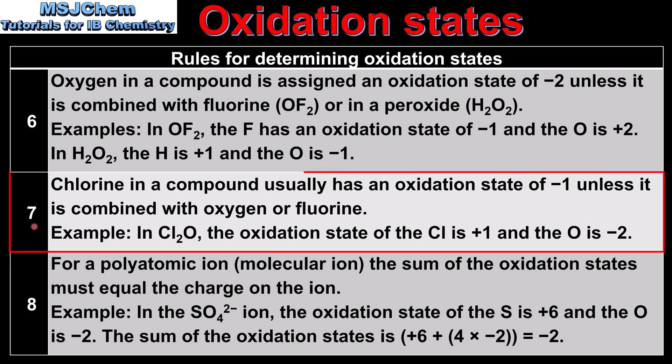Rule 7 concerns chlorine. Chlorine in a compound usually has an oxidation state of minus 1, unless it is combined with oxygen or fluorine. For example, in Cl2O, the oxidation state of chlorine is plus 1 and O is minus 2. You should be aware that chlorine, like all group 17 elements, can have variable oxidation states, so you can't always assume chlorine is minus 1.